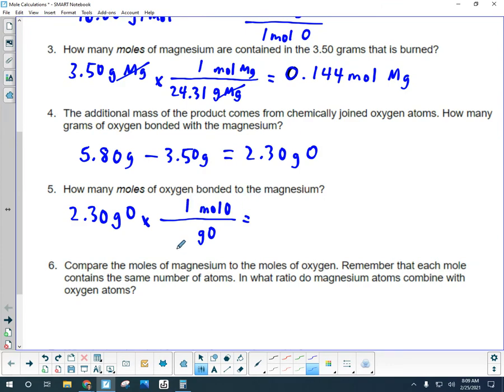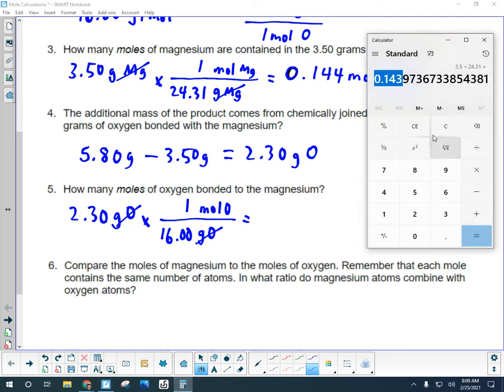I want to flip the sense of the conversion so that I cancel the gram amount. So the math that I'm doing here is taking 2.30 times 1, which is 2.30, dividing by the molar mass of 16 grams.